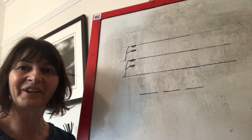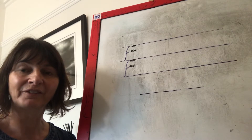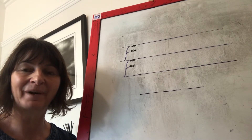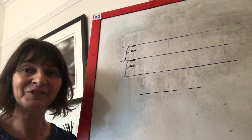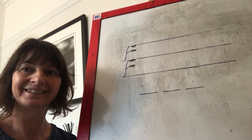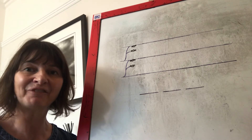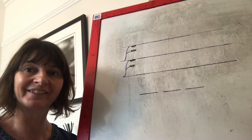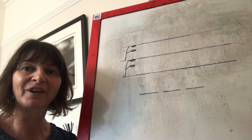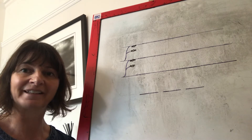Hello children, it's phonics time. Have you got your boards, your pens and your rubbers ready? Well done. Can you tell your grown-ups what do we learn in phonics? That's right, we learn to read and write. We learn our letters and our sounds. Well done. The first thing we need to do children is flash through the sounds that we've learnt already. Are you ready?